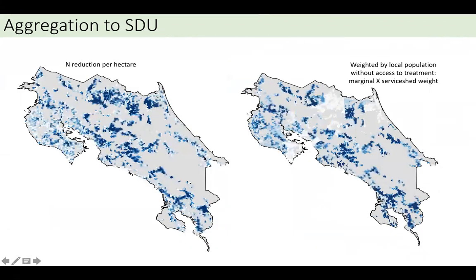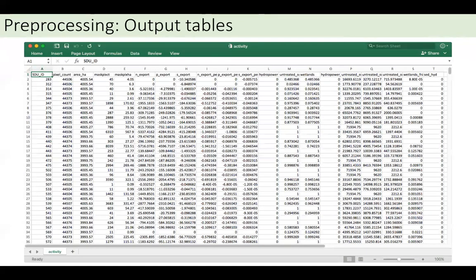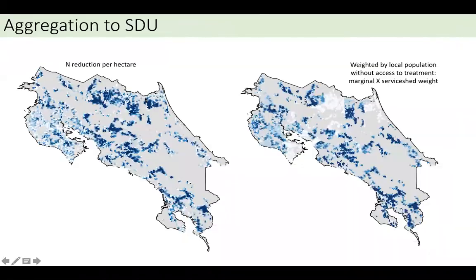After you've done that, this is what it might look like: there's the aggregation of nitrogen reduction per hectare at the pixel level up to the spatial decision unit — in this case unweighted by any service sheds. And here on the right, a service shed has been applied reflecting the proportion of the population drinking untreated surface water. The areas of value have shifted around a little bit as a result of applying the weighting process. Once pre-processing is done, it generates a set of tables in the workspace corresponding to each of the different activities you've provided data for — a summary of nitrogen export, phosphorus export, and whatever else you run, organized by spatial decision unit ID. This can be joined back to a spatial decision unit shapefile for visualization.